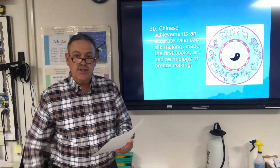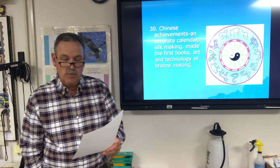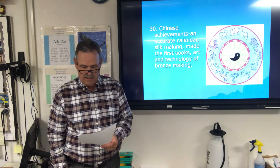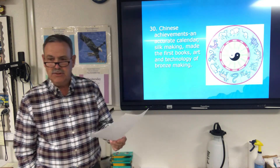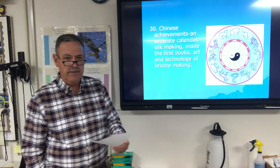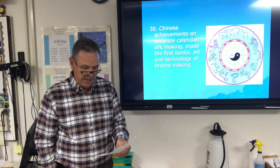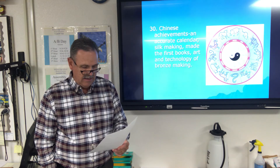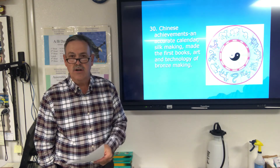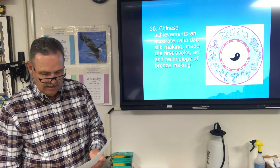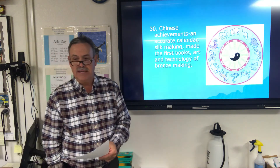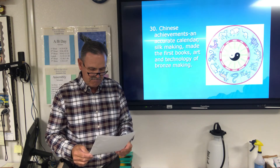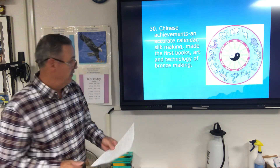Some Chinese achievements include an accurate calendar — actually 365 and a quarter days, like we have now — though it's unclear if they used something like our leap year. Silk making was very important, and they also produced some of the first books, developed art, and mastered the technology of bronze making.